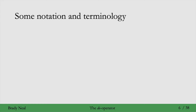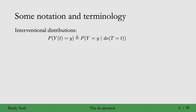We can introduce a bit more notation now that we have this do operator. The first is interventional distributions, and these are actually something we've already seen. Y_t here is the potential outcome, and we're writing the distribution for that here, but this is the same thing as if we were to write p of y given do T equals little t. So this do expression here is just another way of writing the potential outcome distribution. And a common shorthand that we'll use here is just removing the big letters, so writing p of little y given do little t. And these are all different ways of writing an interventional distribution, which we will shortly contrast to observational distributions.